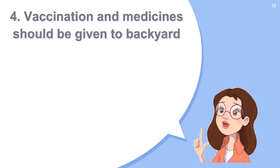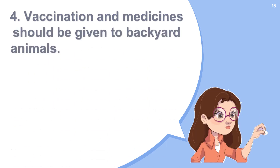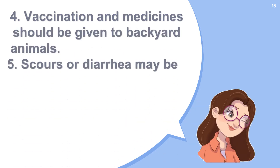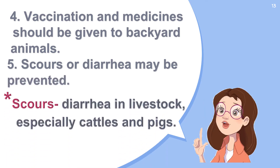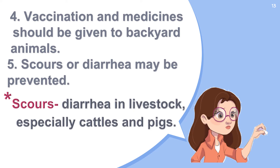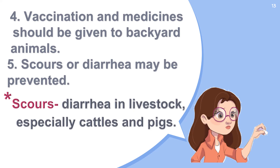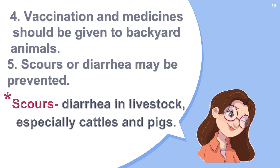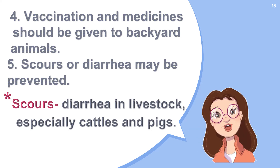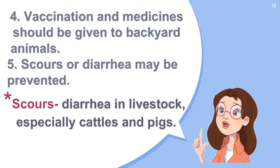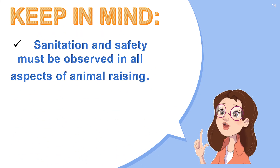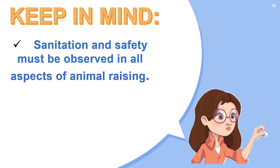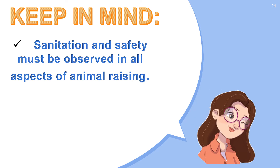Fourth, vaccination and medicines should be given to backyard animals. Fifth, scours or diarrhea may be prevented. Scours is diarrhea in livestock, especially in cattle and pigs. Scours may be prevented by adding antibiotics to the drinking water of the animals. Keep in mind, sanitation and safety must be observed in all aspects of animal raising.